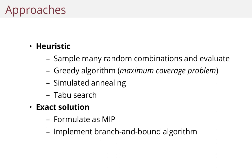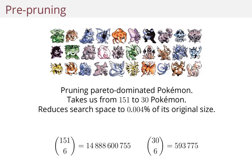We're going to talk about two of these: the greedy algorithm and the branch and bound algorithm. But no matter what you do, you should always remove these dominated or Pareto-dominated Pokemon first.